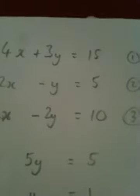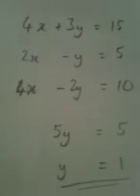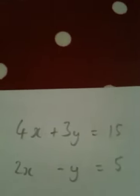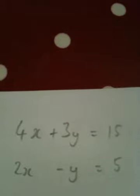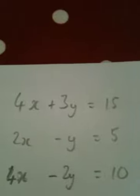Question 4. So solve algebraically, 4x plus 3y equals 15, 2x minus y equals 5. To solve something like this, we need the same coefficient or the same amount of either the x's or the y's. So what I'm going to do here is I'm going to double the bottom equation. So I've called the top equation number 1, the second equation number 2.